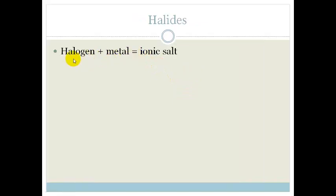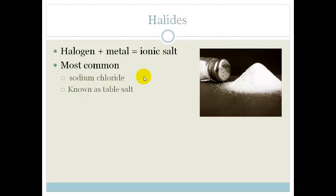Halides are basically a Halogen plus a Metal. Halogen plus a Metal always make an Ionic Salt. The most common of these that we are used to using is Sodium Chloride, which is known as Table Salt. And here's a little picture so you know what you're talking about. So these are called Halides.